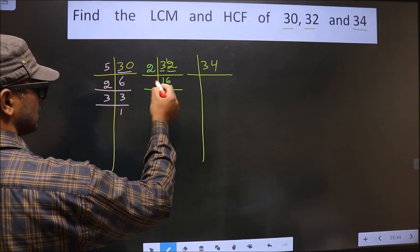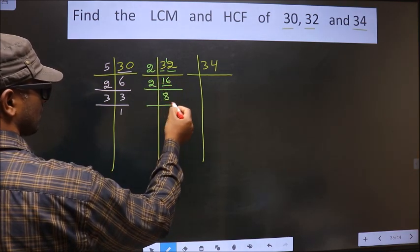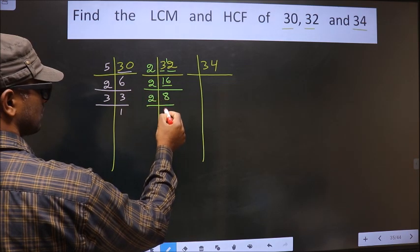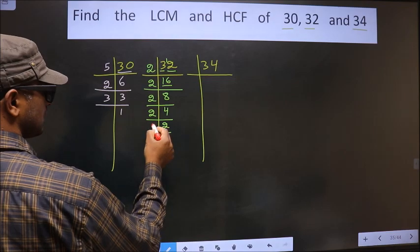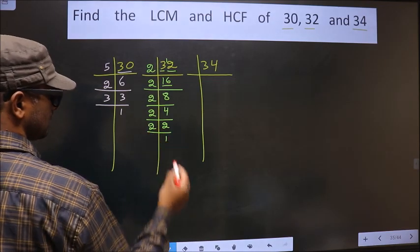Now here we have 16. 16 is 2, 8, 16. Now 8 is 2, 4, 8. 4 is 2, 2, 4. Now 2 is a prime number. So we take 2, 1, 2.